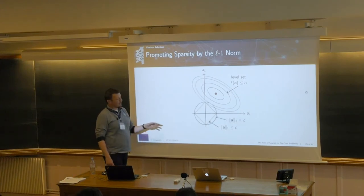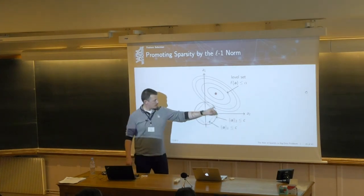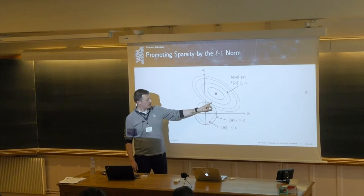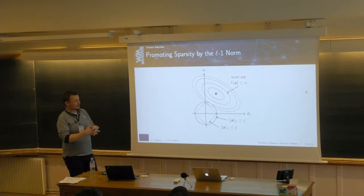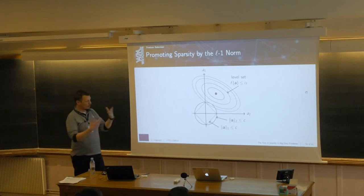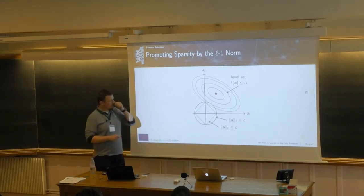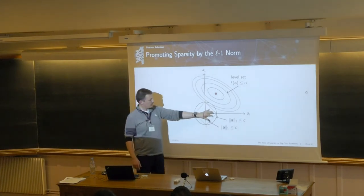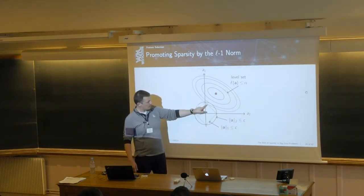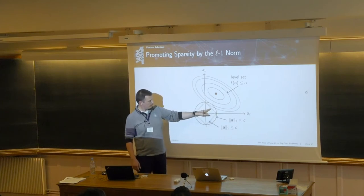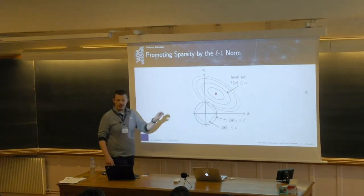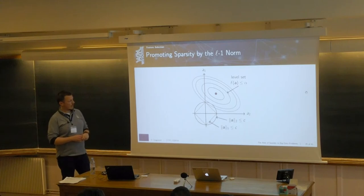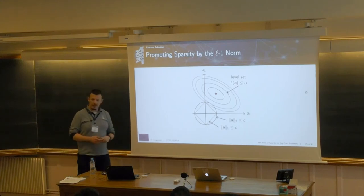This contrasts with the norm-2 regularizer, whose feasible set is a circle, so the tangency point lies somewhere on the boundary where both entries are generally nonzero. In higher dimensions, with norm-1 the solution is almost always concentrated at a vertex where most entries of a are zero. These norm-1 problems are called the LASSO — Least Absolute Shrinkage and Selection Operator.